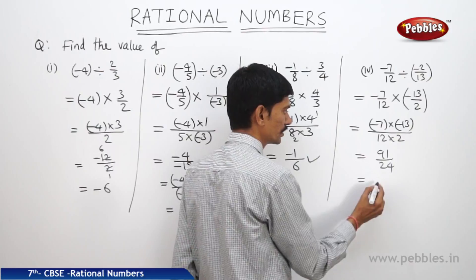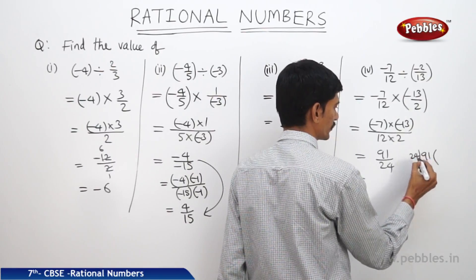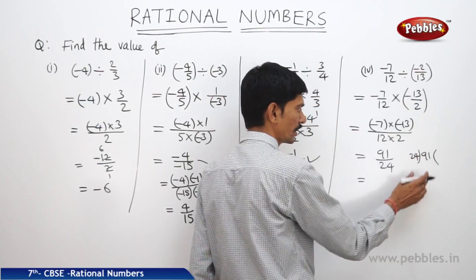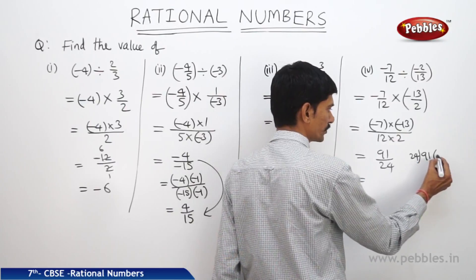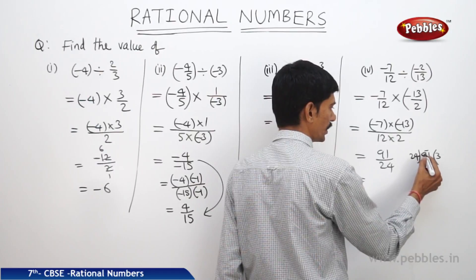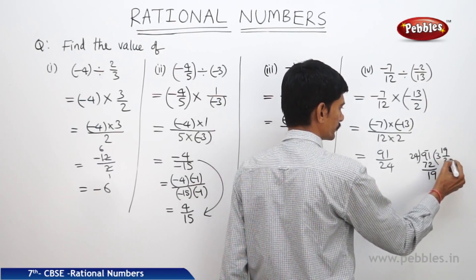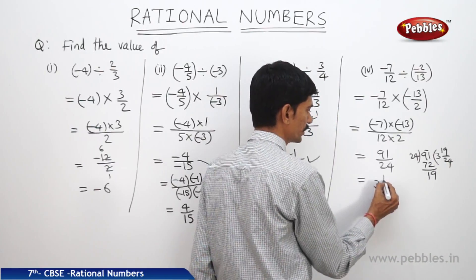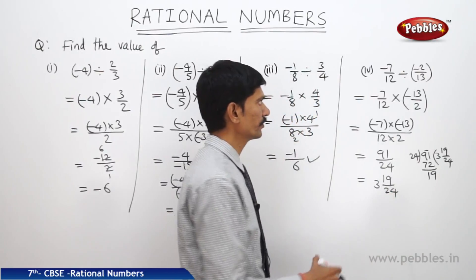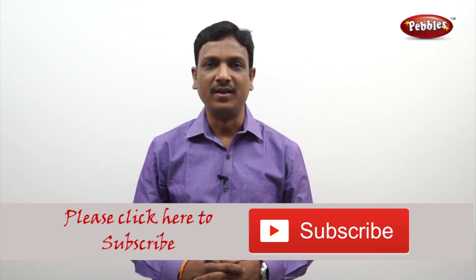When we divide 91 by 24, 24 threes are 72, and the remainder is 91 minus 72 which is 19. So this gives 3 19 by 24. This is the quotient when we divide minus 7 by 12 by minus 2 by 13.